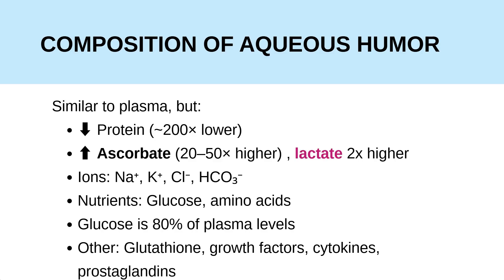Then we have lactate, which also builds up within the aqueous humor due to the anaerobic metabolism of the cornea and the lens. What about glucose? Glucose is at 80% of plasma levels — less than plasma, but still sufficient to provide nutrition to the lens and the cornea.